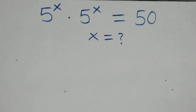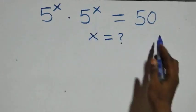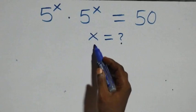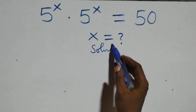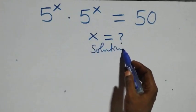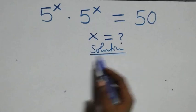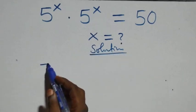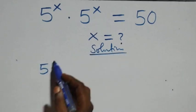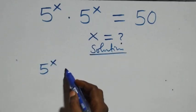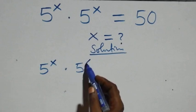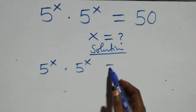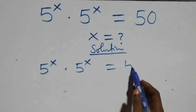Welcome. How to solve this nice exponential equation. The problem we have here is 5 raised to the power x times 5 raised to the power x equals 50.